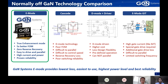As you can see on the screen, today there are four types of GaN normally-off technology on the market: Cascode, D-Mode plus driver, E-Mode GIT, and also the GAN Systems E-Mode. Our products have the following advantages that really differentiate us from the other suppliers.